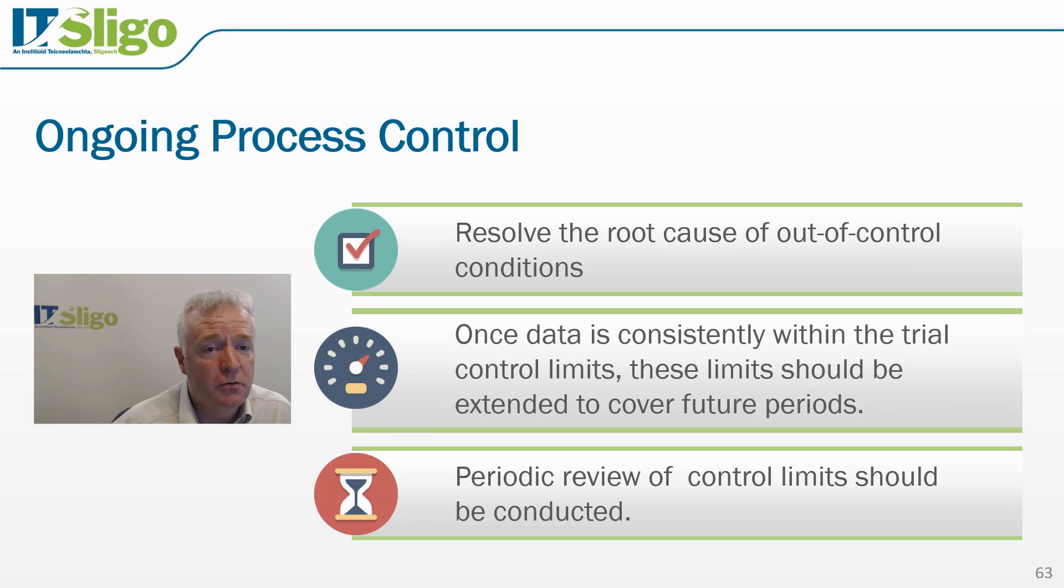In order to achieve ongoing process control, we need to resolve the root cause of any out of control condition. Once the data is consistently within these trial control limits, then these limits should be extended to cover future periods. We should periodically review the control limits to ensure that they are consistent with the process.